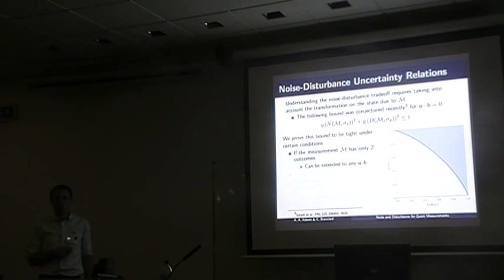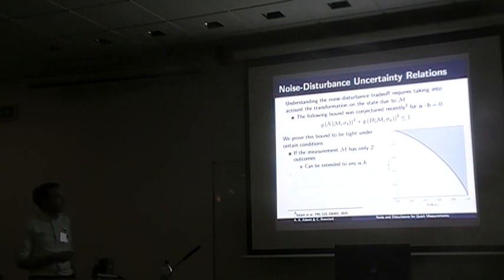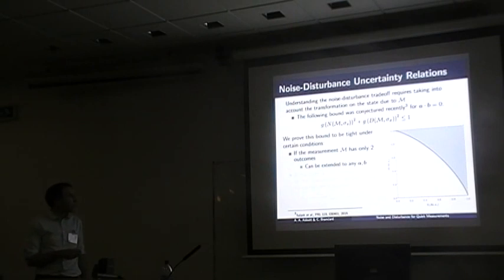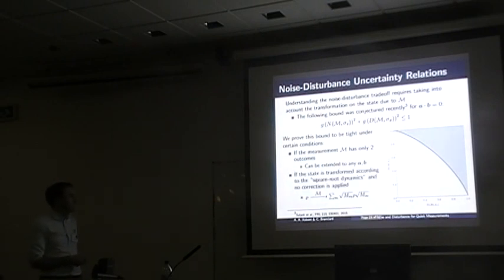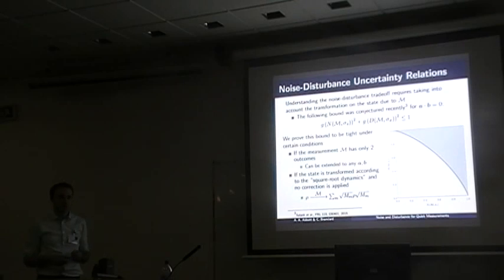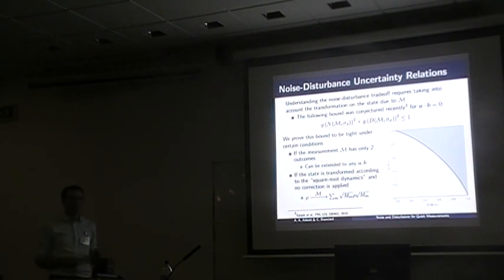We were able to prove this bound holds in two particular cases. The first is for measurements with only two outcomes — this is in fact a tight bound, and it can be saturated with two-outcome measurements. This can be generalized for non-orthogonal observables. The second case is when the state undergoes a generalized Lüders rule update, which includes projective measurements and physically relevant combinations, assuming no extra correction is required.